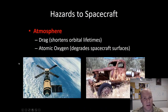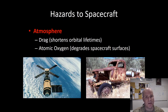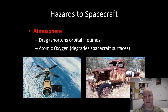Our next hazard is that of atmosphere. The particles in the atmosphere can cause drag. The effect of drag on our satellite is variable depending on the orbital altitude and spacecraft size. Between 130 and 600 kilometers it varies considerably, while above 600 kilometers the effects of drag are pretty minimal because the atmosphere is so thin. Atomic oxygen from the atmosphere can also degrade the spacecraft's surfaces as it oxidizes, much like it does on Earth.